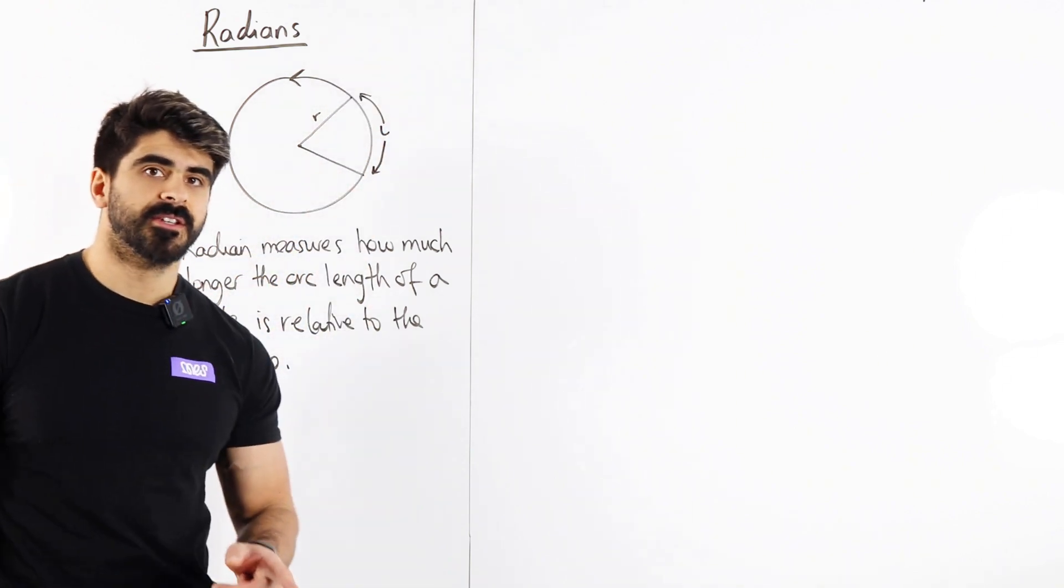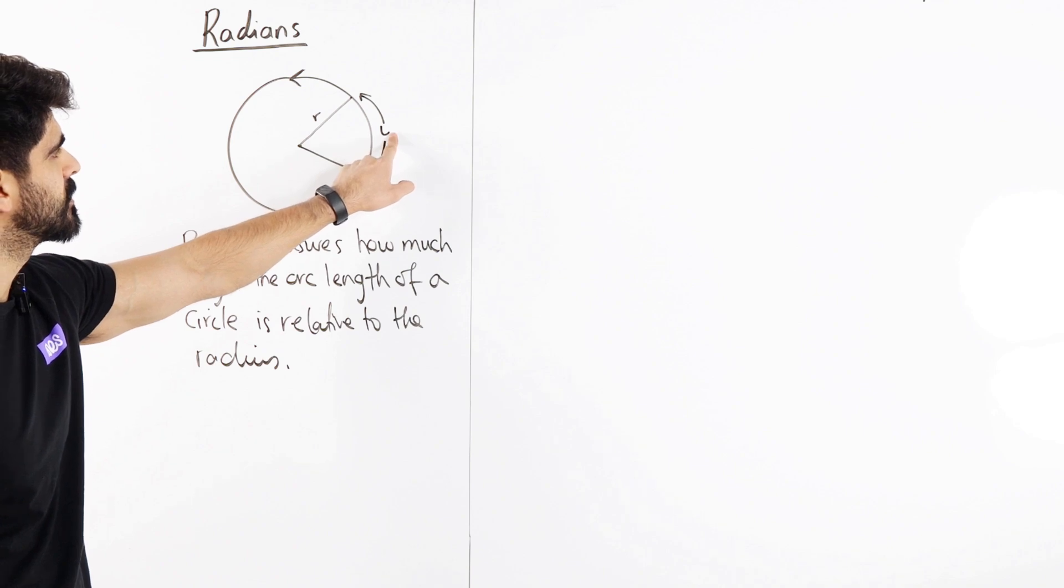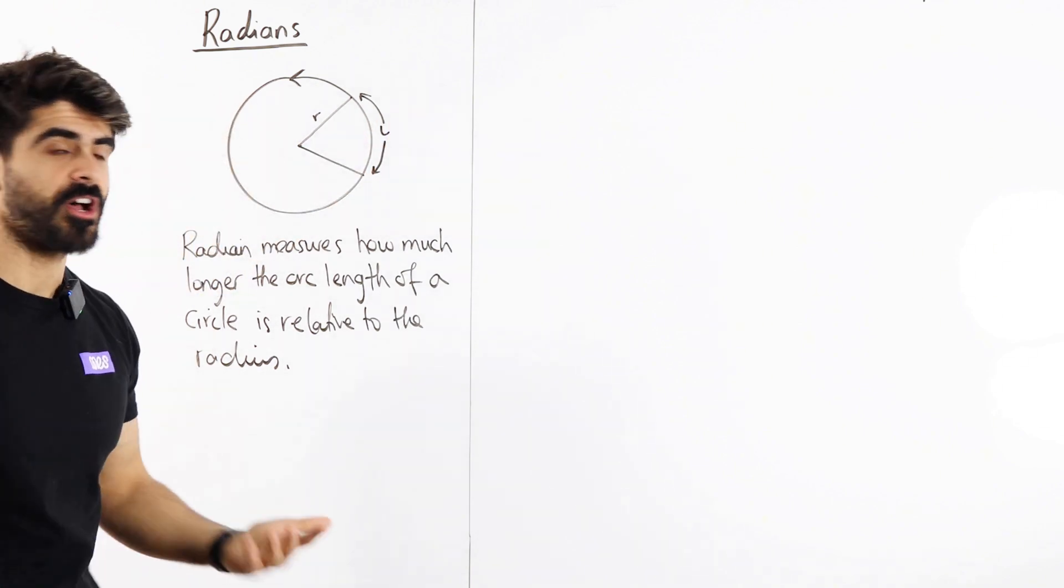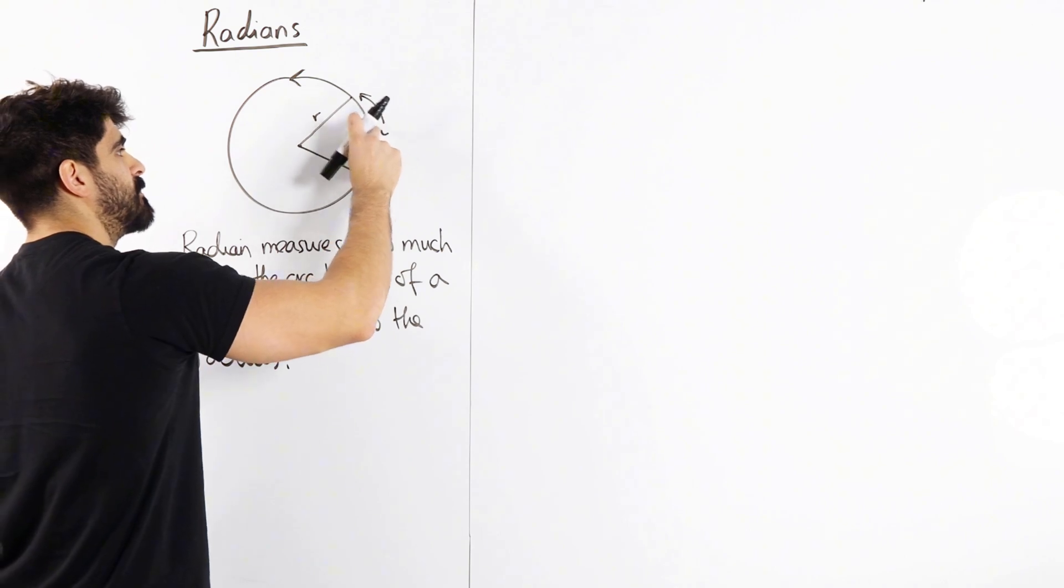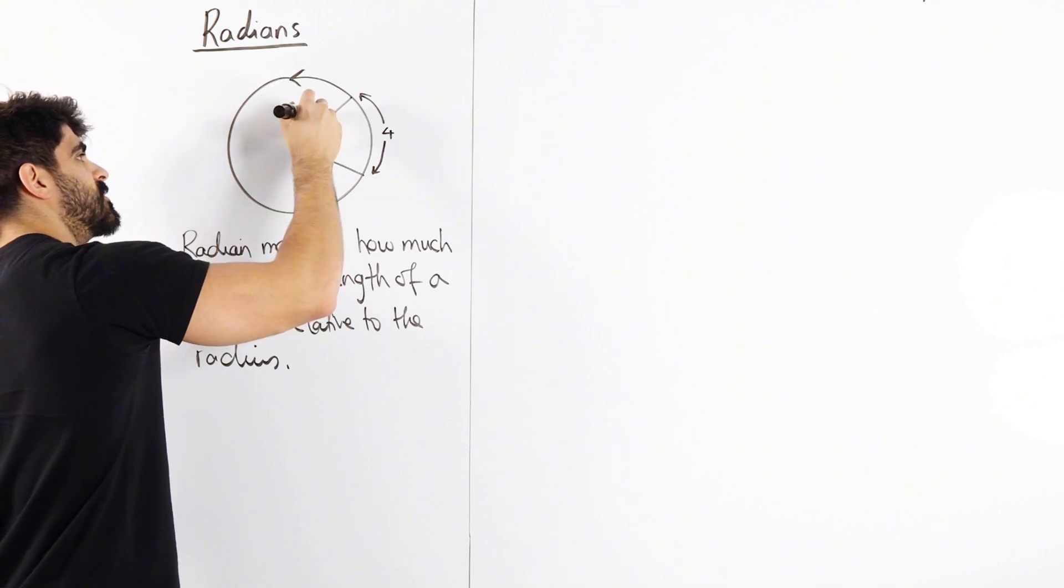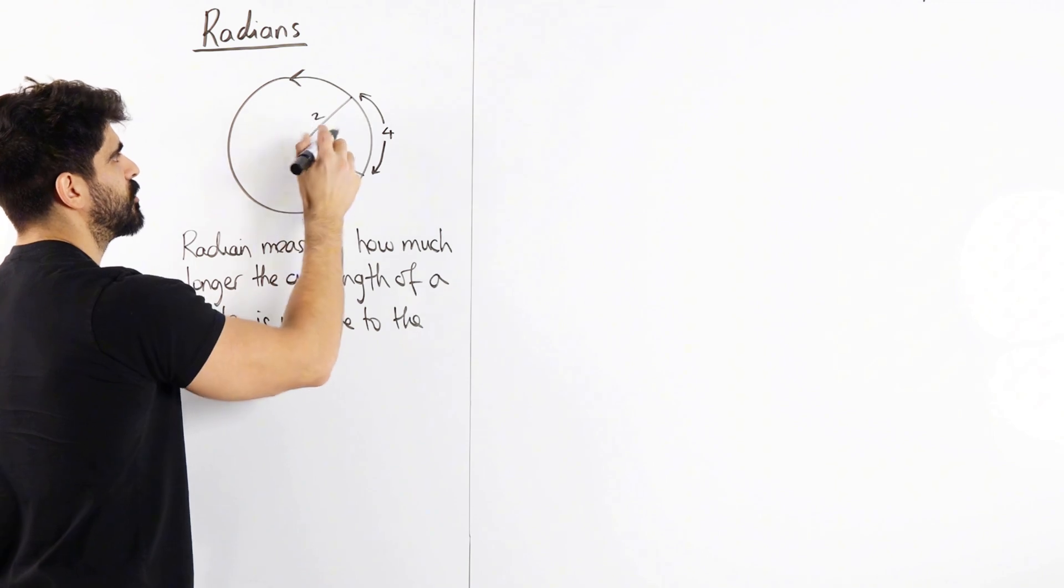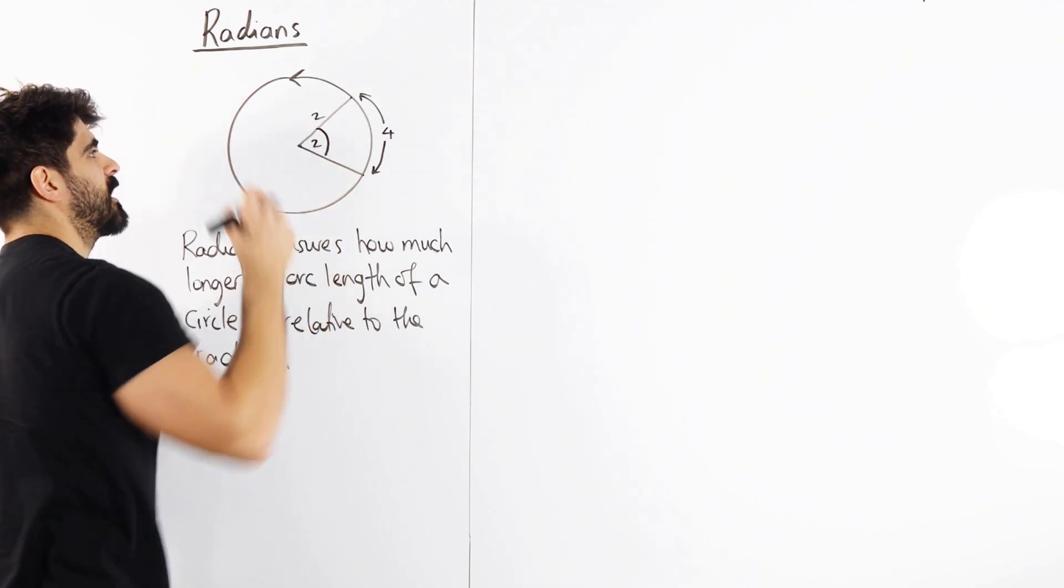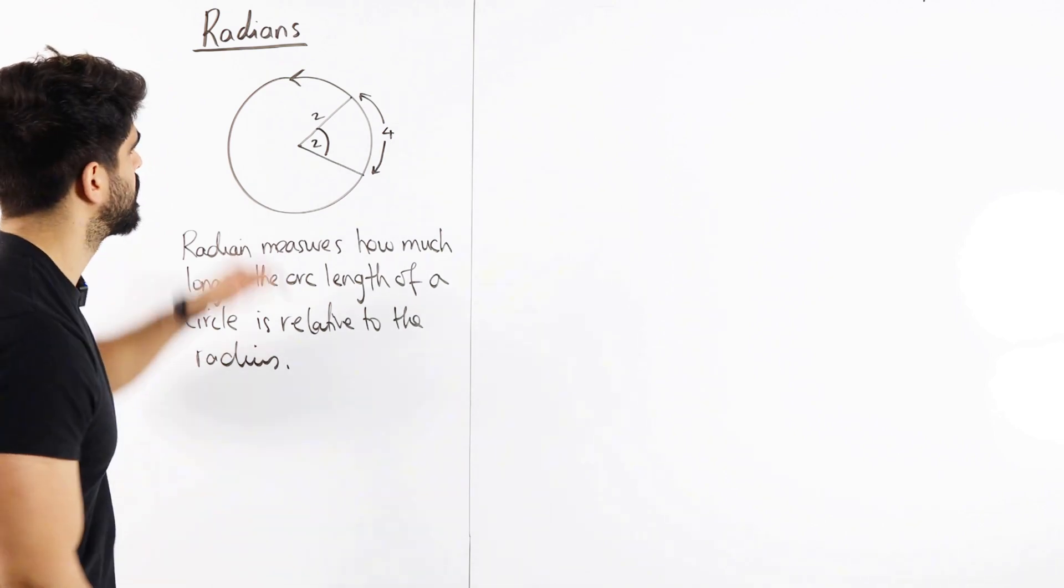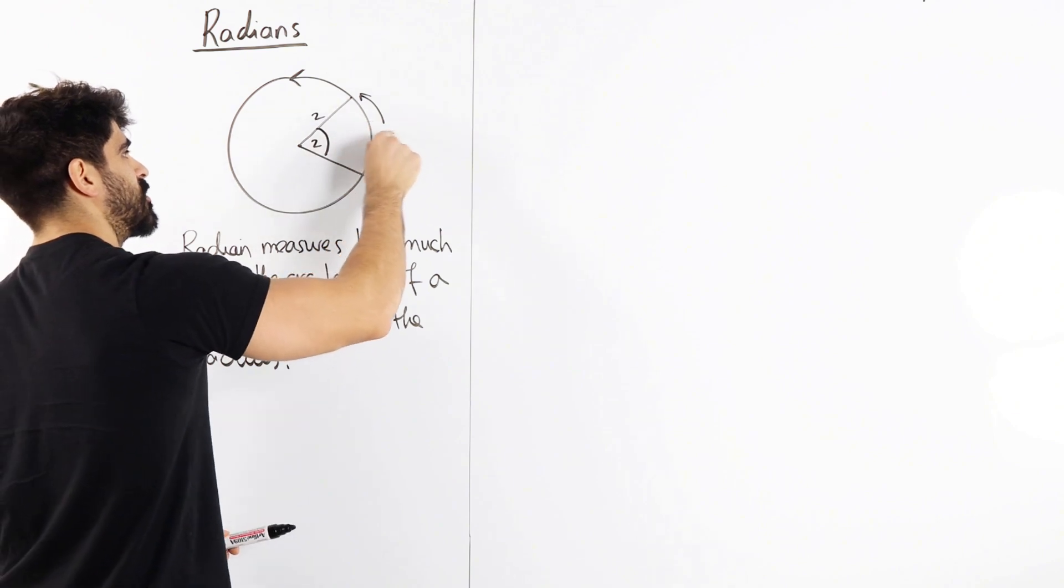A radian measures how many times bigger this is relative to this. So for example, if I let this be four, if that length is four and this length is two, four is two times bigger than two. So the angle here we would write is two. Two times two is four. Pretty cool, right?